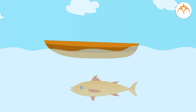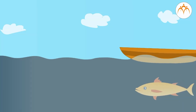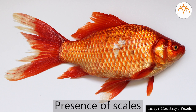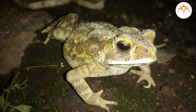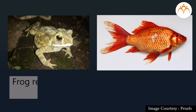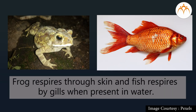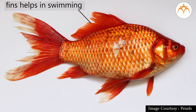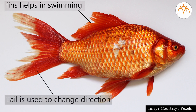Now, I will tell you about their special characteristics that help them live in water. The body shape of most fishes is like a boat, which helps them swim faster. Fishes have scales on the body so that excess water does not enter their bodies. Scales are absent in frogs; a frog breathes through its skin when in water, while fish has gills to respire. Fish uses fins to swim, and the tail of a fish works similar to the steering wheel of a car — the tail fins are used to change direction.